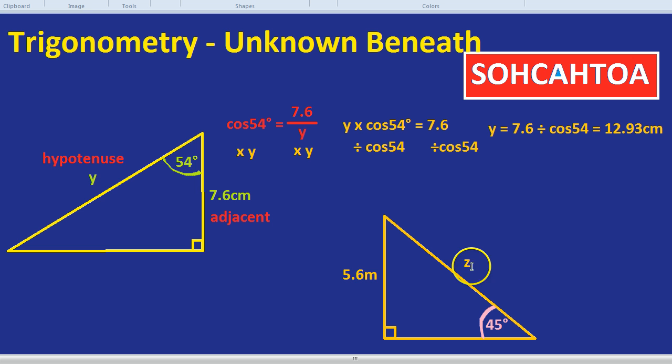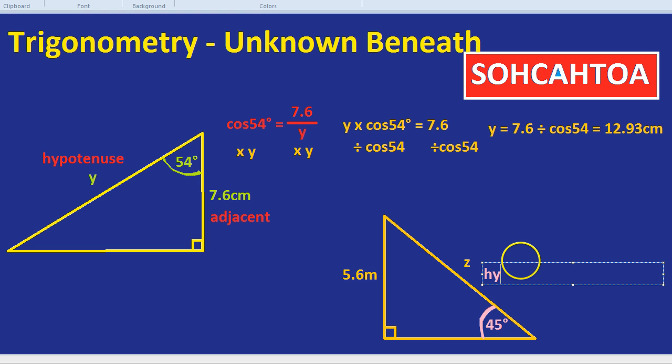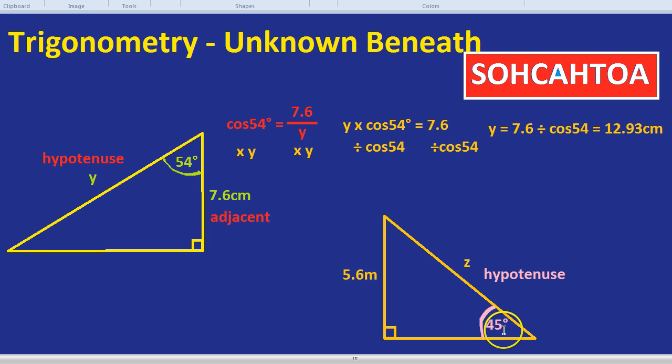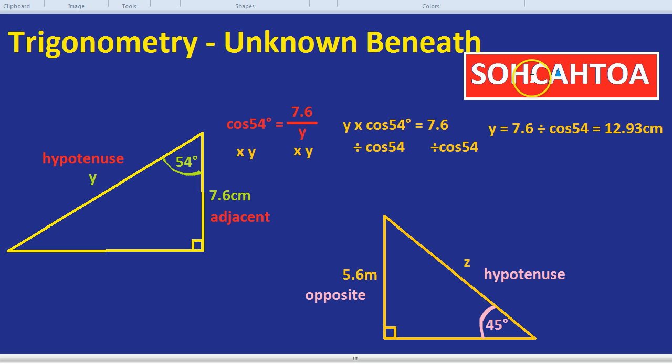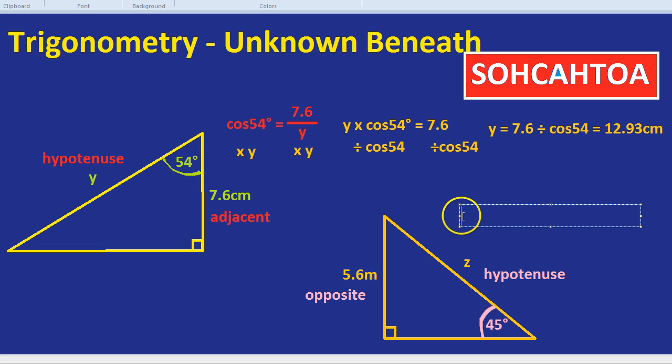Let's label our sides. Z is the longest side and it's opposite the right angle. So we can call that the hypotenuse. The 5.6 is far away from the angle, not touching it. So that's the opposite. So what's the relationship that involves opposite and hypotenuse? That would be sine, because of so, opposite and hypotenuse.